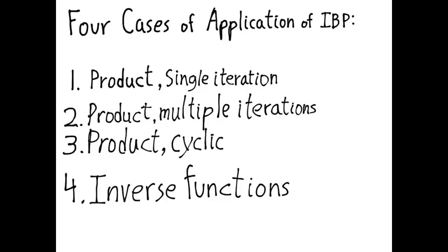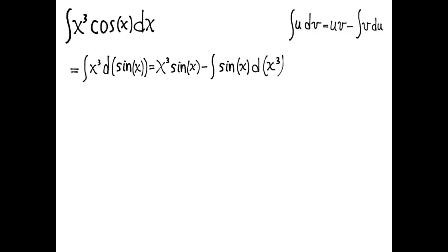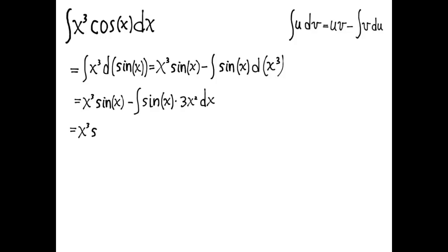The second case is product rule, multiple iterations. The example is the integral of x³·cos x dx. We again use cos x dx for dv, so this becomes the integral of x³ d(sin x). Applying integration by parts gives x³·sin x minus the integral of sin x d(x³). Interpreting d(x³) as 3x² dx, we rewrite this as x³·sin x minus 3 times the integral of x²·sin x dx. We've taken an integral in the form x³·cos x and turned it into x²·cos x — we're going in the right direction.